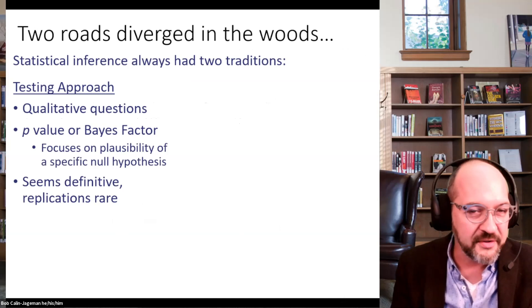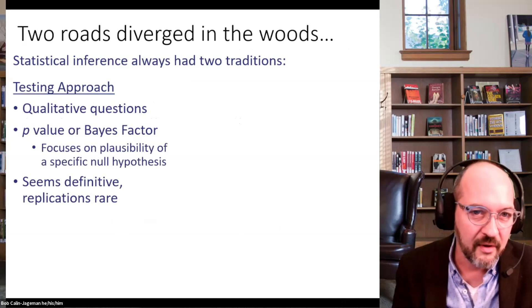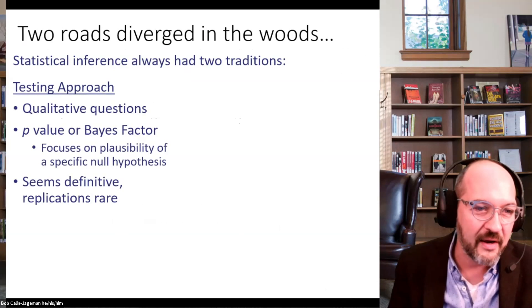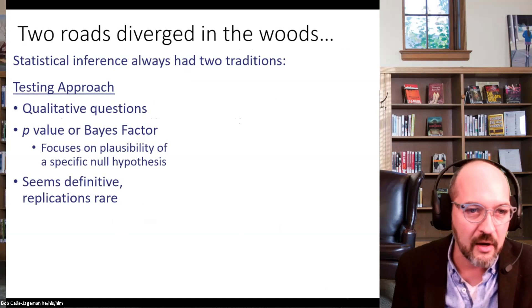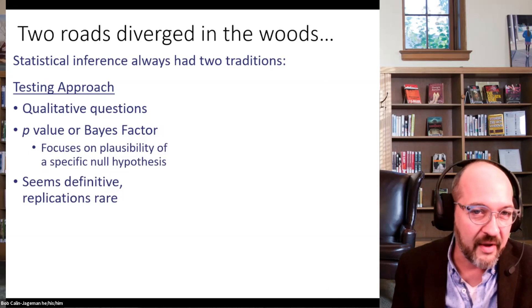There are two long-standing traditions in statistical inference. The testing approach asks a qualitative question — does this drug work, does early childhood education impact IQ? — and answers it by calculating a test statistic, p-value, or Bayes factor, which indicates the plausibility of a specific null hypothesis. You then evaluate that null and make a decision to reject or fail to reject it, and the language of that often seems very definitive.